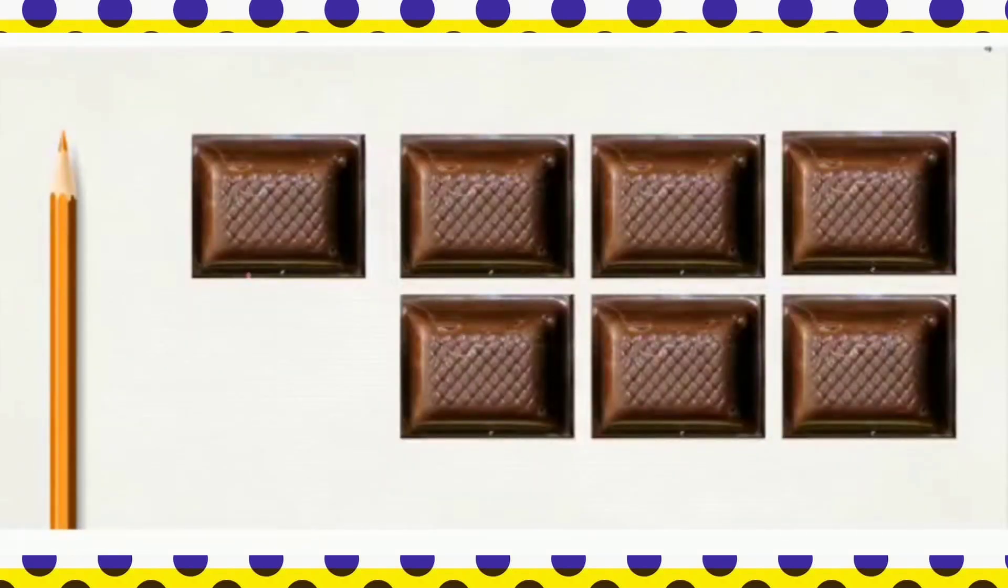Look at another example here. Here are 7 chocolate pieces: 1, 2, 3, 4, 5, 6, 7. I like to eat chocolate. So, I ate 4 chocolate pieces. How many? 4. 1, 2, 3, 4. Out of 7 pieces, if I eat 4 pieces, how many pieces will be left?